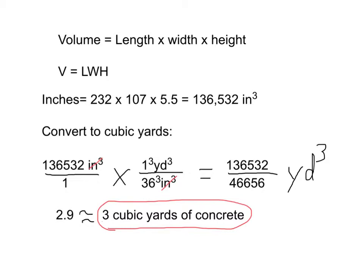Now to convert that to cubic yards, I need to remember that there's 36 inches in a yard. So my unit multiplier is 1 yard cubed over 36 cubic inches. And I set this up this way so that my inches cubed will cross cancel and I'll end up with an answer that's in cubic yards.